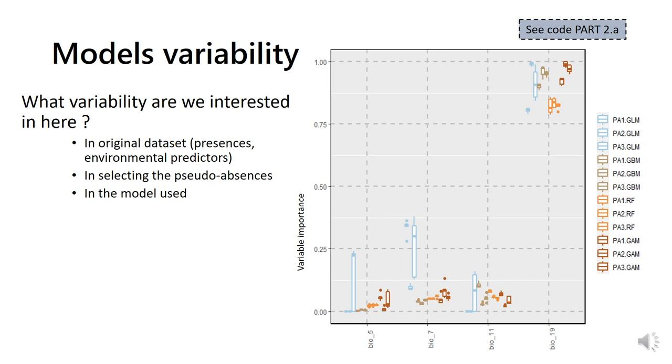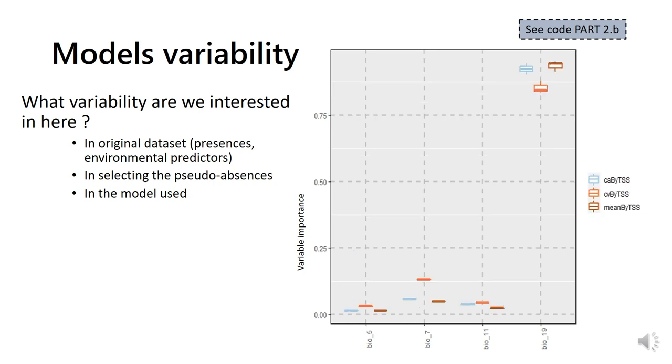Part 2B of code allows you to represent the same graphic, but at the ensemble model level, given that you selected the var import parameter when running the Biomod ensemble modeling function. Here, the ensemble model compiled all models together. Results are shown for community averaging, coefficient of variation, and mean tendency, confirming that bio 19 is the most important variable compared to the three others.